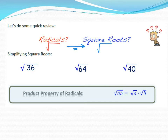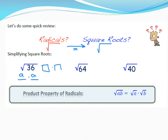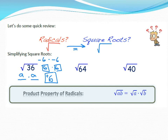What is a square root? Take for example the square root of 36. A square root asks: what number times itself gives you this value? We're looking for two identical factors — a times a equals 36. Six times six gives you 36, so the square root of 36 is positive 6. We're looking at what's called the principal square root, which is always the positive value.